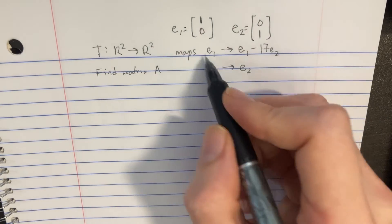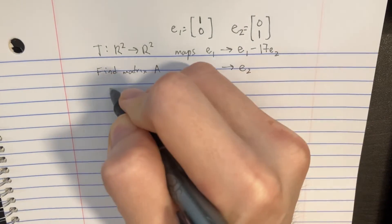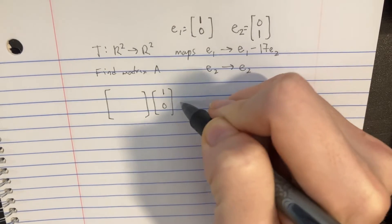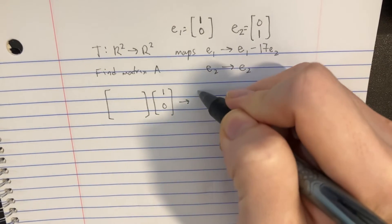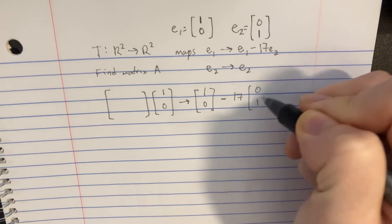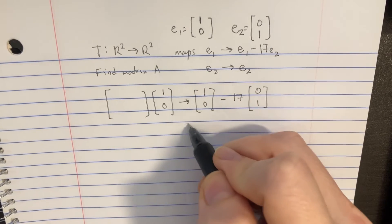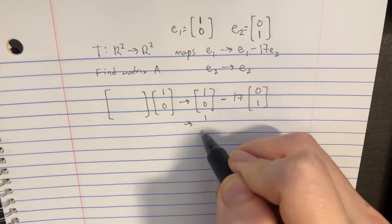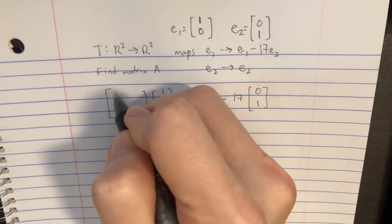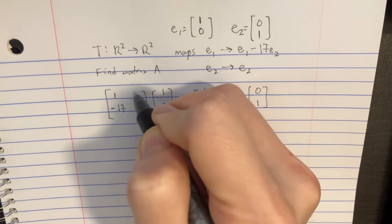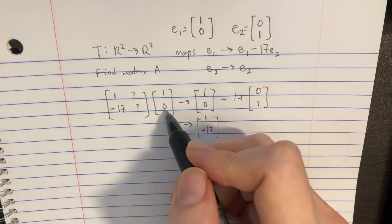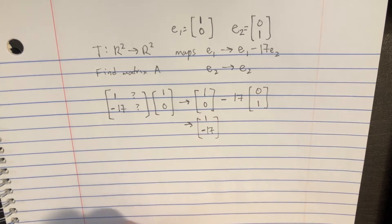Now let's put them into the transformation form. We'll find a matrix A that's going to take E1, which is [1, 0], and transform that into E1 minus 17 times E2, which is [0, 1]. This is just going to equal [1, -17]. To accomplish that, the only way we could do that is to put 1, negative 17 in the first column. We don't really know what's in the other column because it cancels out with that zero. So we have the first half of matrix A.